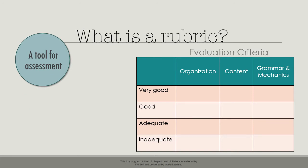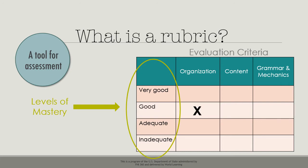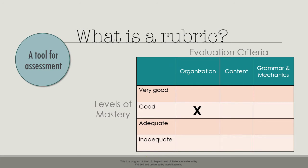Next, a rubric describes the different levels of mastery. In this rubric, the teacher can describe the essay's organization as inadequate, adequate, good, or very good. Each area will be assessed like this. In addition to evaluating the organization, the teacher will also assess the content and the grammar and mechanics.